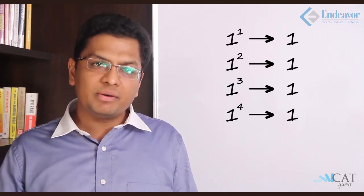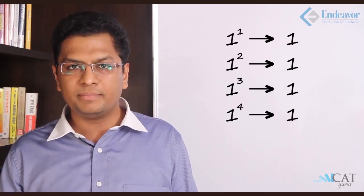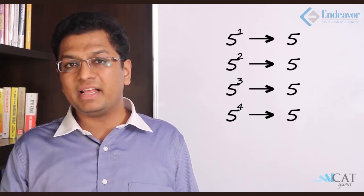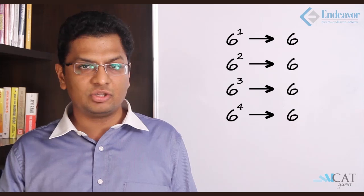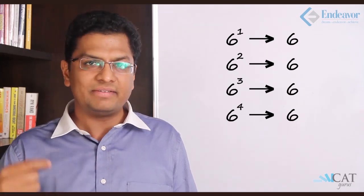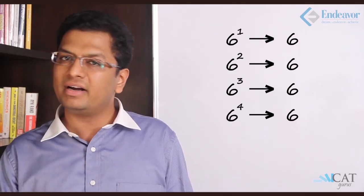Let's take an example of 1. Whichever is the number, if it ends with 1, however be the power, the last digit has to be 1. 1 to the power anything is 1. Same applies to 5, 5 to the power anything is 5, and 6, 6 to the power anything is 6. So 1, 5, and 6 will always repeat no matter what is the power.